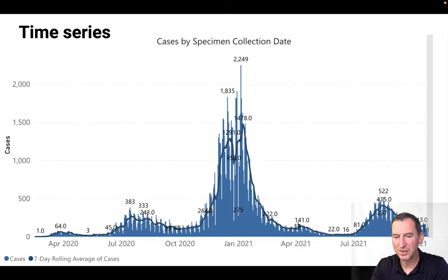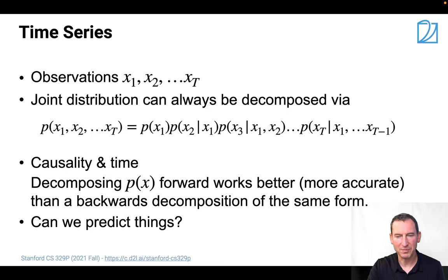Now, something slightly less amusing. This is what the situation looks like with COVID-19 in Santa Clara County right now. And you might ask yourself, is there any structure to it? These are observations, and you can clearly see that there's some sequential form. And what happens is that you basically have those observations x1, x2, all the way up to xT. And you want to model the joint distribution between all those random variables rather than just one at a time.